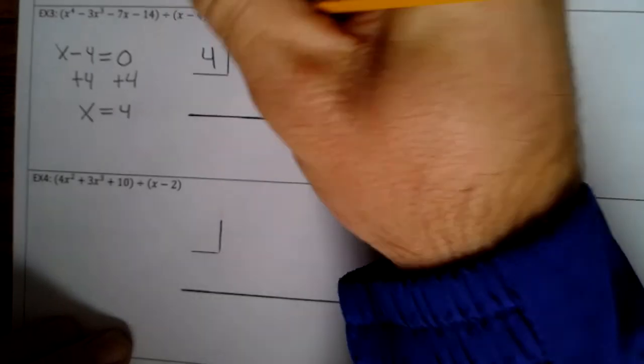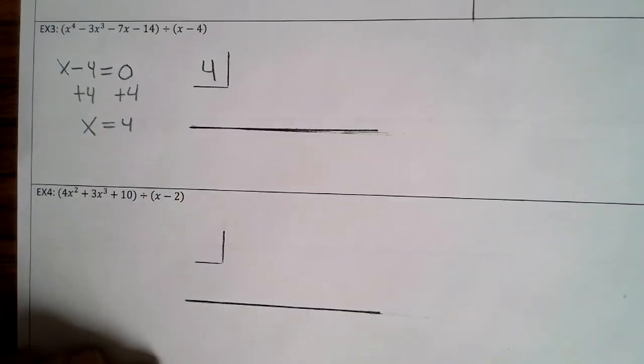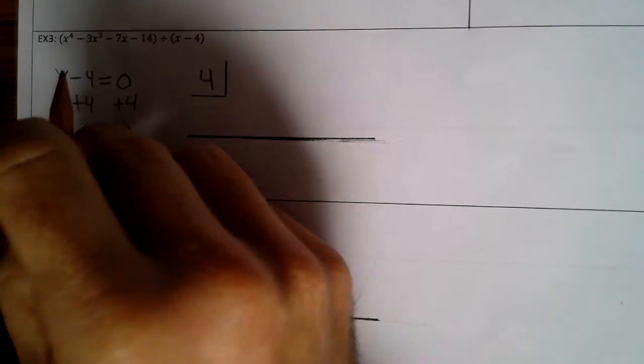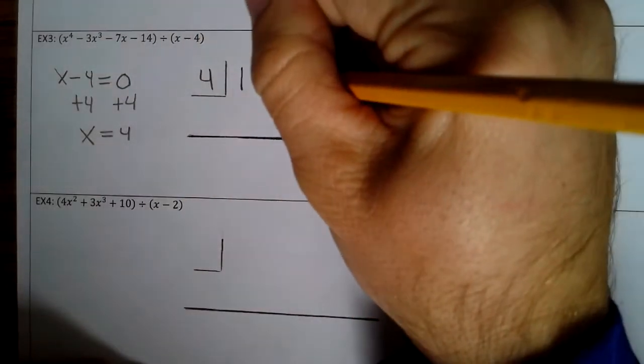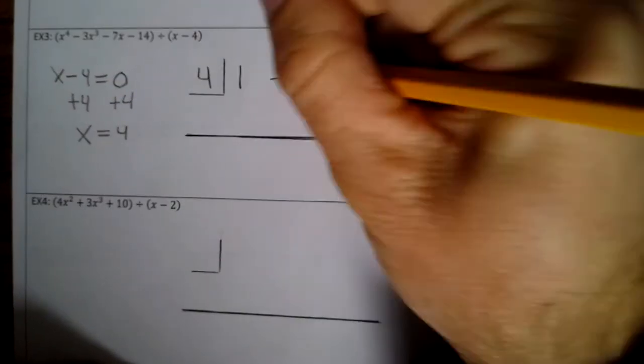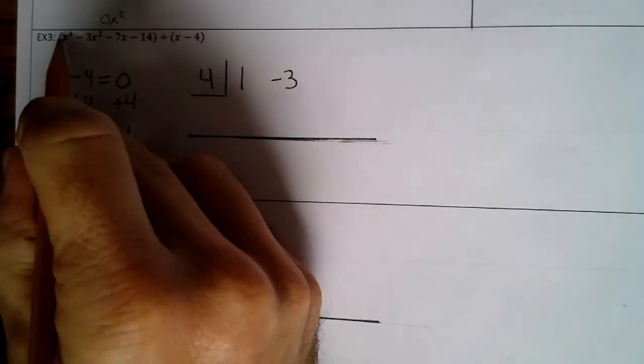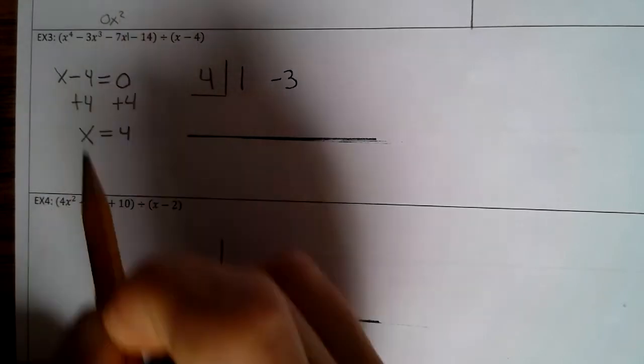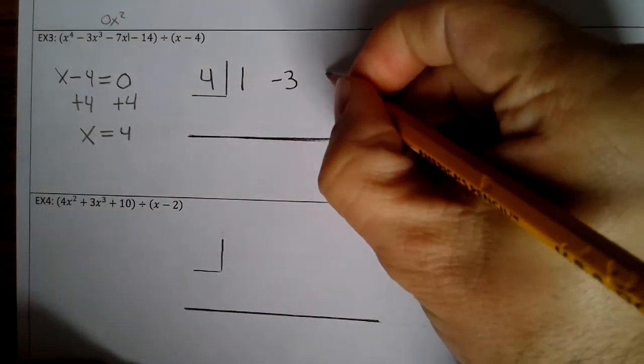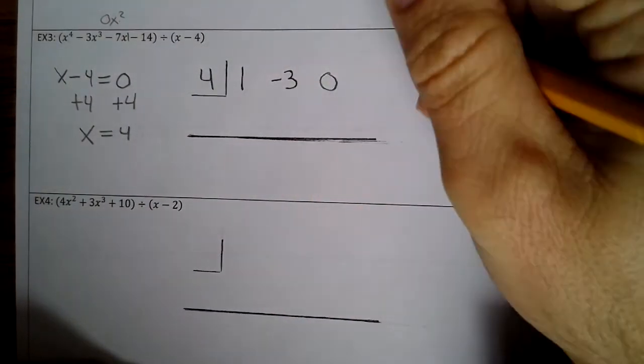Alright, so now we take the coefficients. So that's 1x⁴ - 3x³. Uh oh, there's no x² term, so we have to incorporate 0x². You have to have every exponent. 4, 3, 2, 1, so on. Okay? So + 0x² - 7x - 14. Okay.